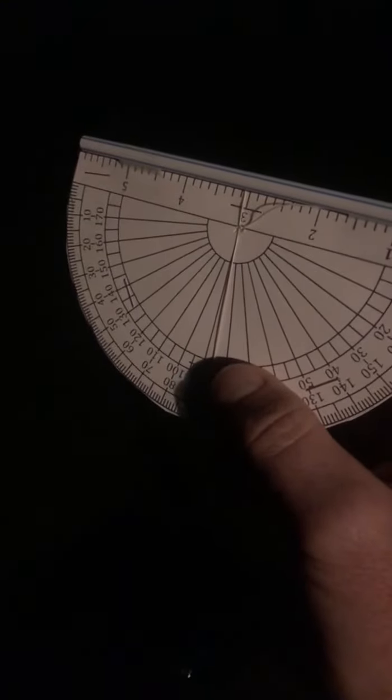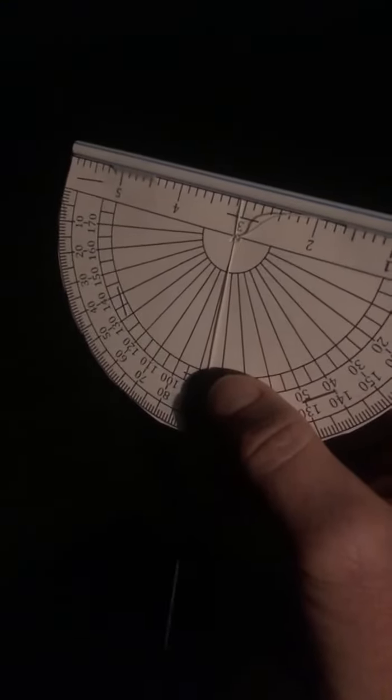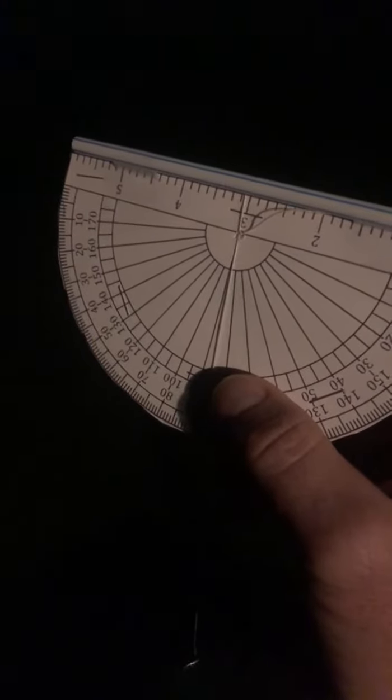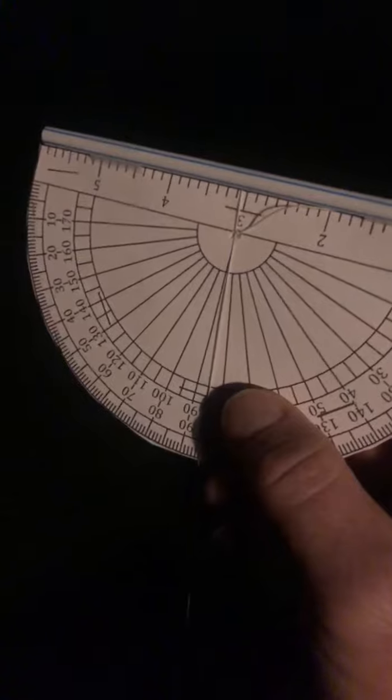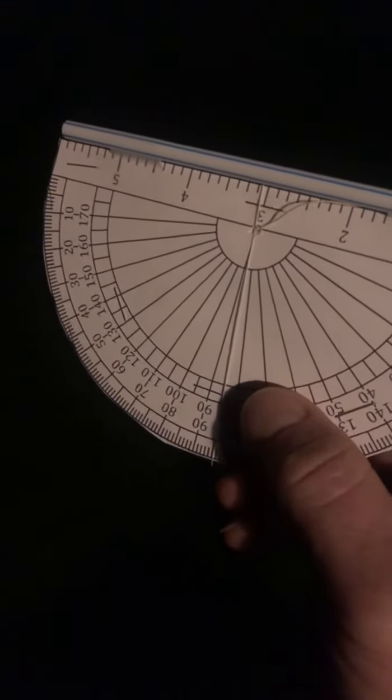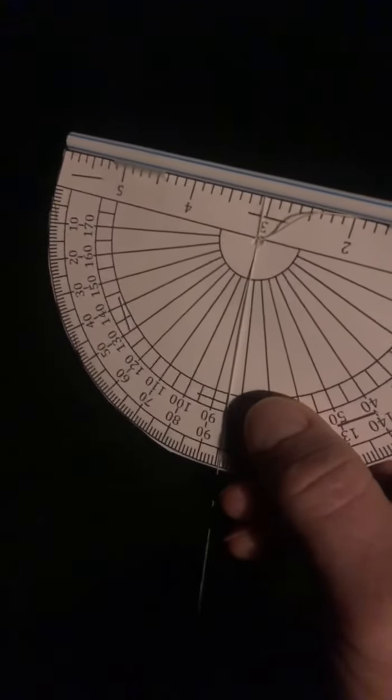All right, so here I am at night and I can see the stars well enough to see the Big Dipper. The two pointer stars from the bowl of the Big Dipper point to Polaris, the North Star.